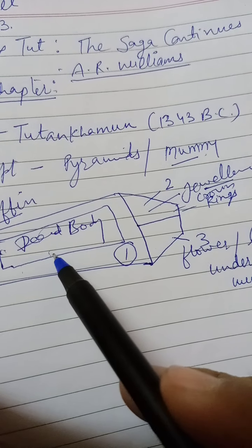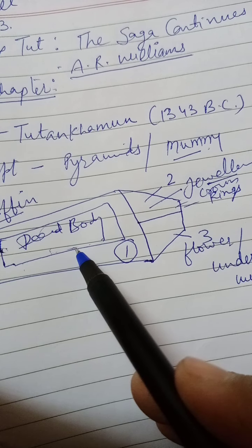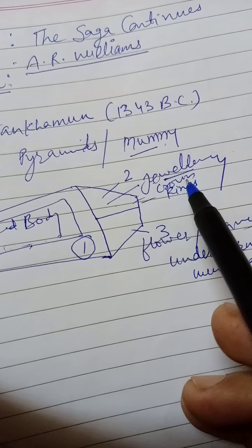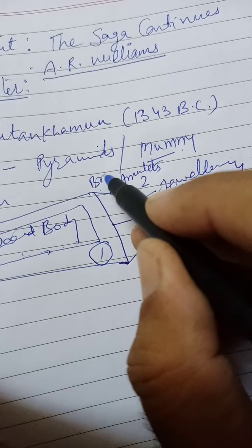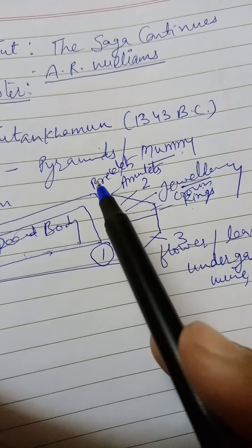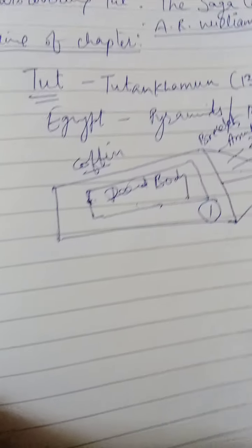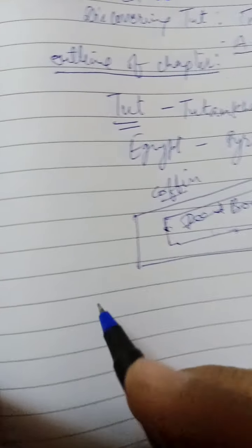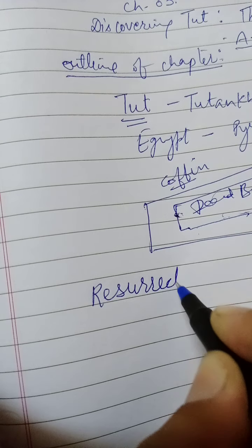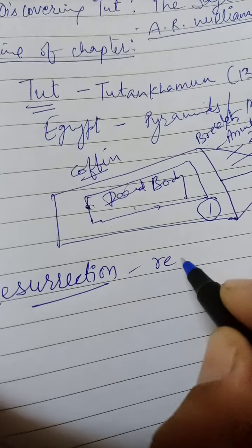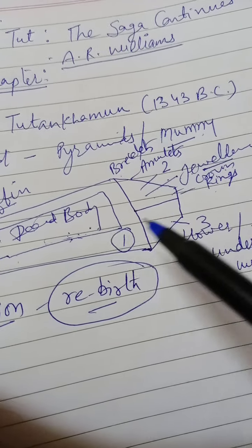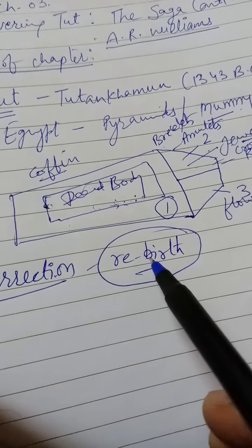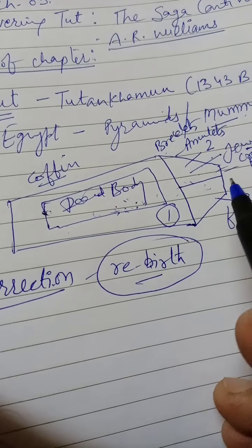This portion was occupied by the dead body, but this person was fully adorned with jewelry like crown, rings, amulets, and bracelets. What was the reason they used to keep all these things? The answer is resurrection — these people believed in rebirth. That's why they kept all these things to make the departed soul comfortable, believing the soul would return to the same royal family.